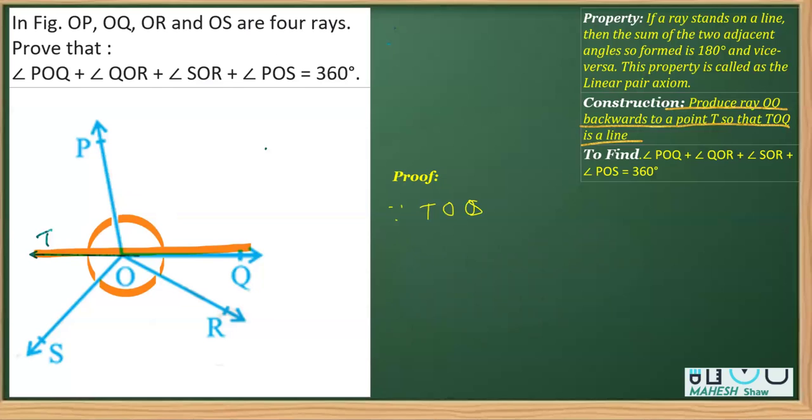...is a line, therefore the sum of these angles - so I named this angle POT plus angle POQ is equal to 180 degrees, and that is from linear pair. The reason is linear pair, and I mark it equation one.